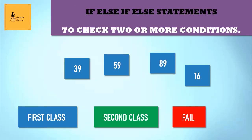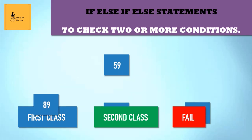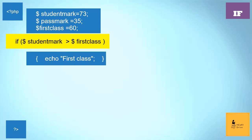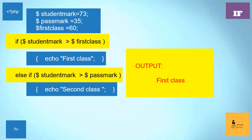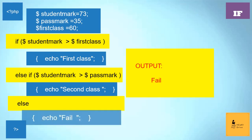In certain cases, two or more conditions have to be checked. In such cases, the if-else-if statement will be used. Here, a teacher wants to check whether the student has got first class marks, second class marks, or failed marks. To get output for this, the teacher has to check two conditions, so the teacher can use if-else-if-else statements. First, we'll declare student marks, pass mark, and first class mark variables. In the first condition, the student's mark will be checked whether it's greater than first class marks. If true, first class will be printed as output. If the condition goes false, the else-if condition will be checked — whether the student's mark is greater than pass mark. If true, second class will be printed. And if that condition also fails, fail will be printed as output.